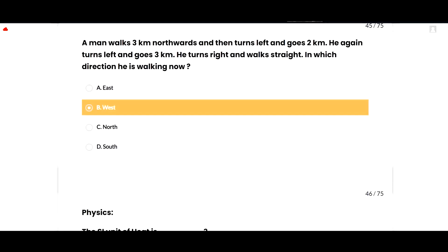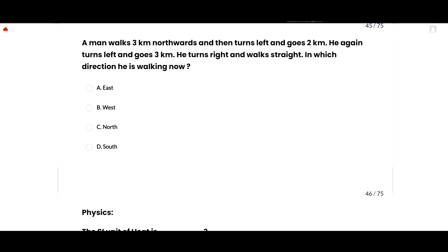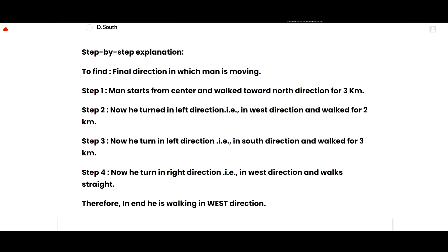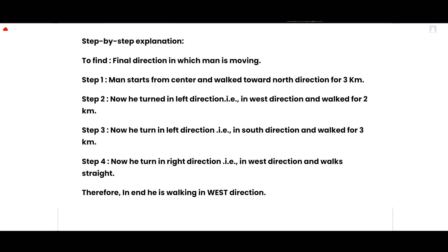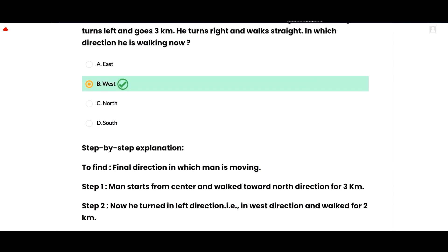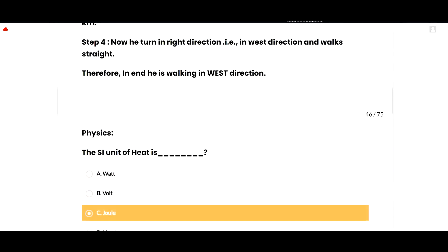The next MCQ: a man walks 3 km northward, then turns left and goes 2 km, then turns left again and goes 3 km, then turns right. In which direction is he now walking? Step 1: north for 3 km. Step 2: turns left — now heading west for 2 km. Step 3: turns left — now heading south for 3 km. Step 4: turns right — now heading west. So he is walking west. Option B is correct.